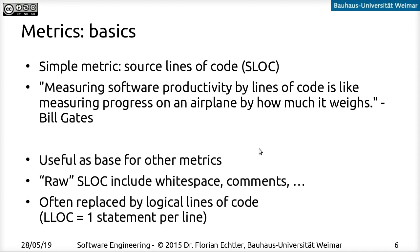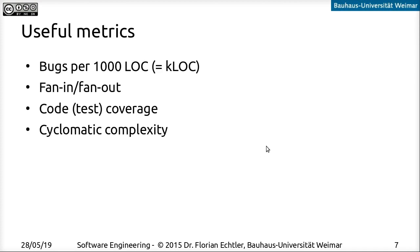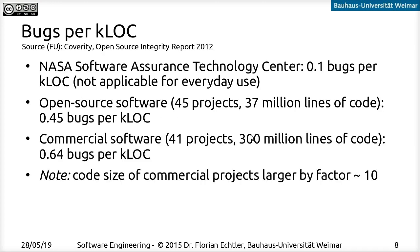The only useful metric in terms of lines of code is to use it as a base for other metrics. It's usually measured in logical lines of code — each statement counts as one line, with whitespace and comments ignored. Useful metrics include: bugs per 1000 lines of code, fan-in and fan-out values, test coverage, and cyclomatic complexity. Let's look at each in turn.